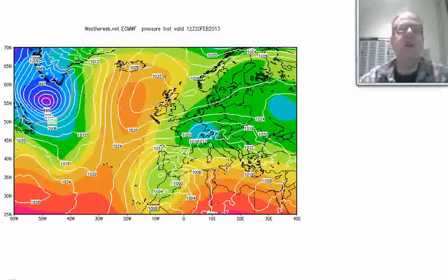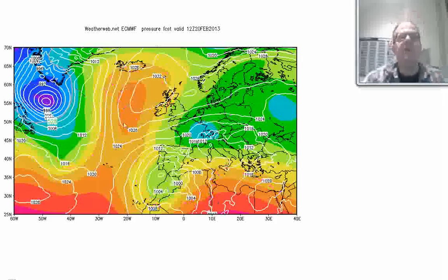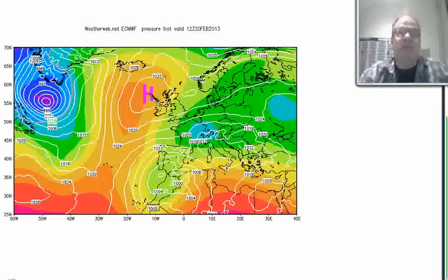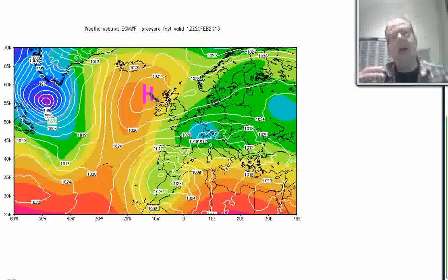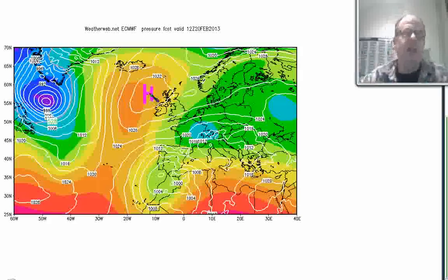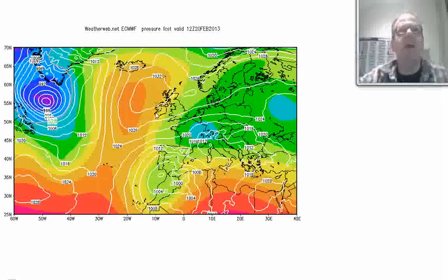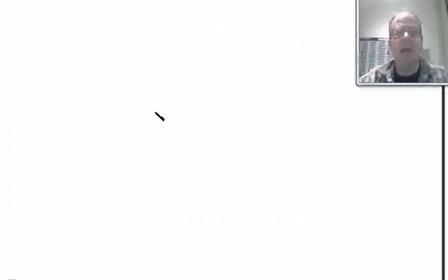But it's this region here that I want to explain a little bit about what's going on, because ridges at upper levels are tied with high pressure at low levels. A ridge at higher levels is similar to a ridge at low levels in that it's something to do with high pressure. I just want to explain a little bit more about what we're looking at when we look at a chart like this.